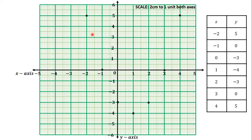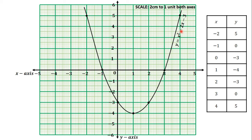Looking at the pattern of the points, our graph will have a U-shape. You join these points freehand to get the graph of y is equal to x squared minus 2x minus 3. We learned that if the coefficient of the quadratic term is positive, the graph will have a U-shape. Here the coefficient is 1, which is positive, so the graph has a U-shape. This is the graph of y is equal to x squared minus 2x minus 3.